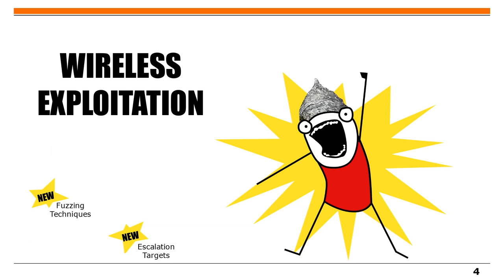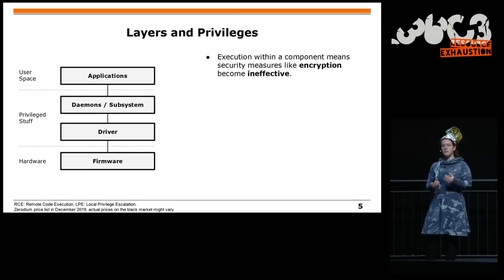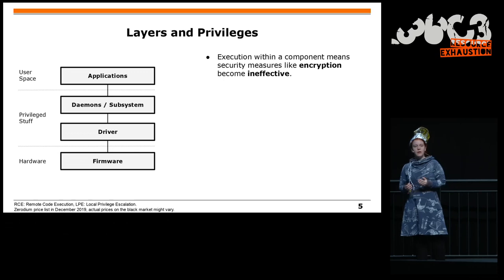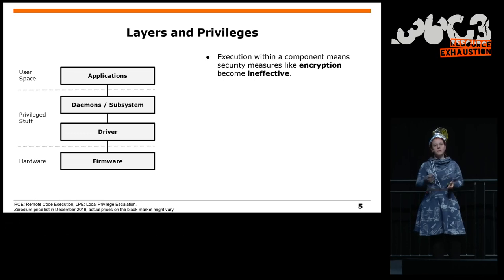Most of this talk will be about wireless exploitation, with new content on fuzzing techniques and a new escalation target. To understand what a wireless exploit does, separate it into different layers: the lowest layer is a hardware chip running firmware — say, Bluetooth firmware — attached to a driver. Then there is privileged software, and finally applications. No matter which layer you exploit, some security measures become ineffective. For example, if there is encryption and you have an exploit for that layer, the encryption becomes ineffective.